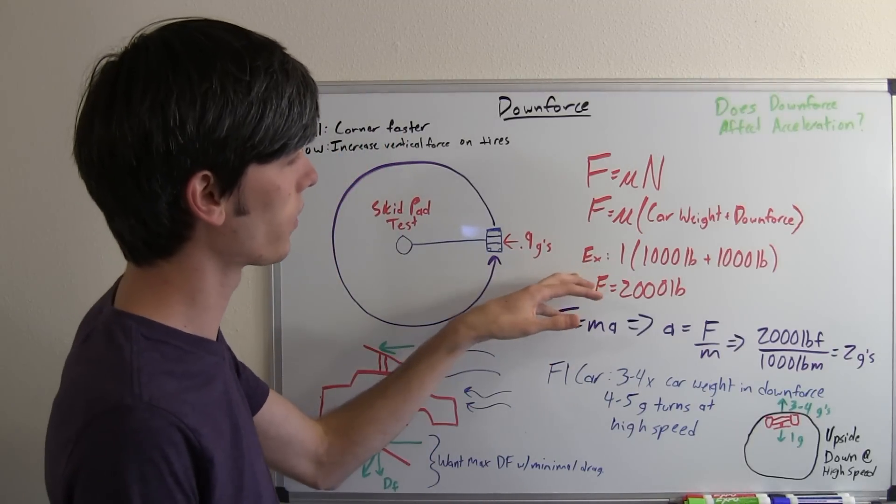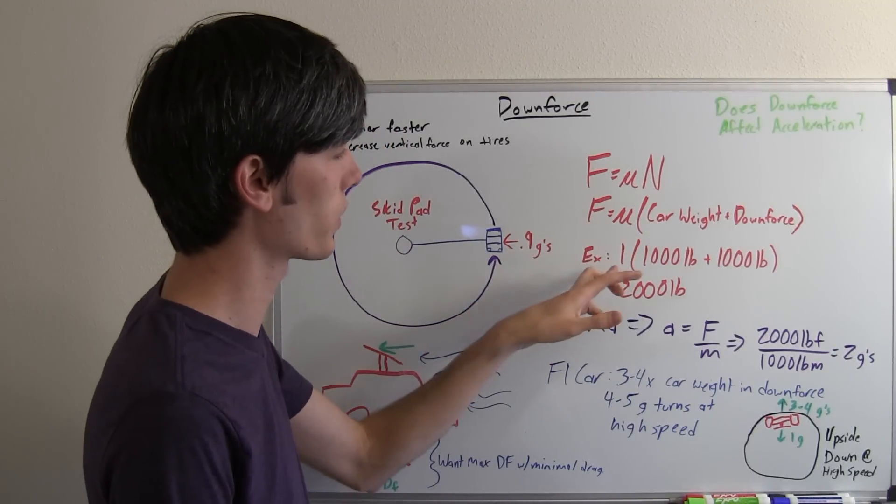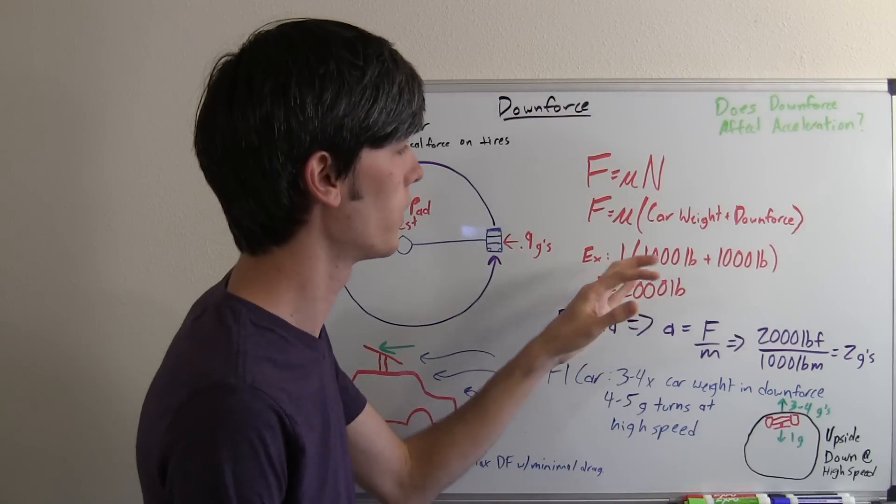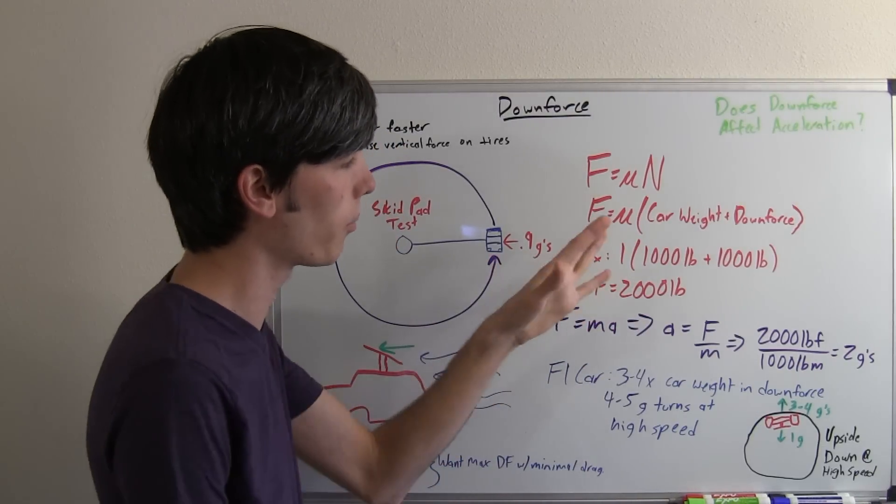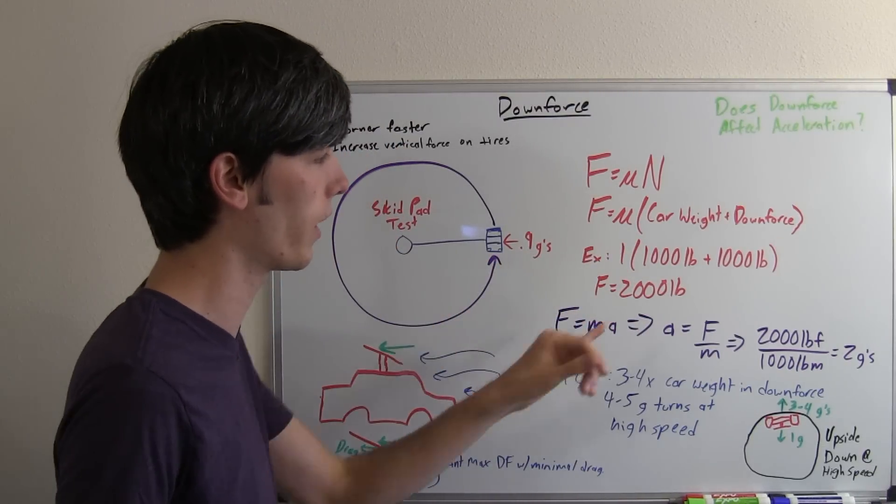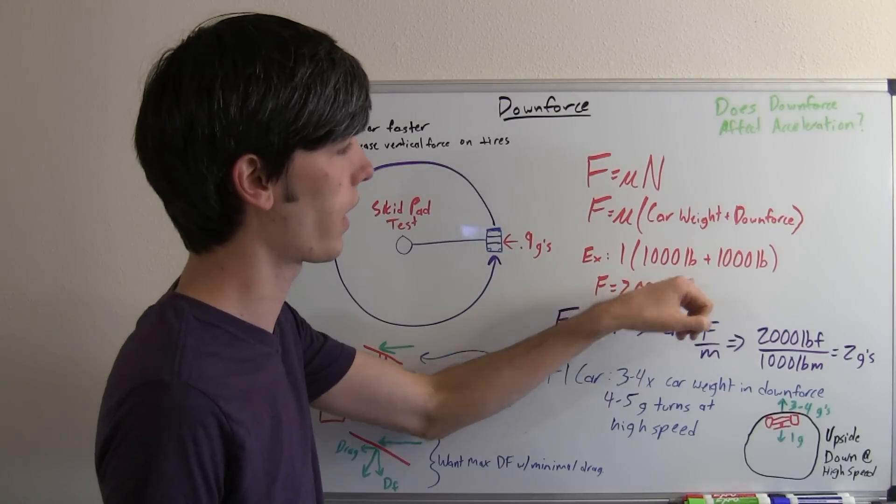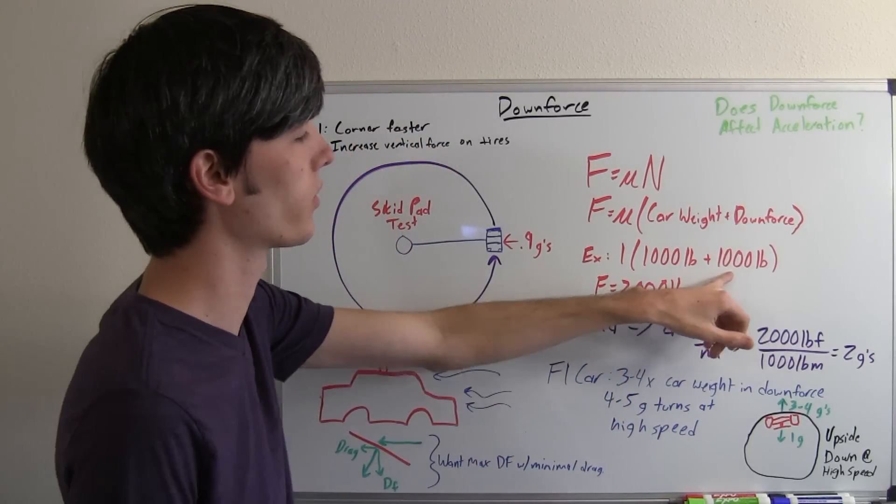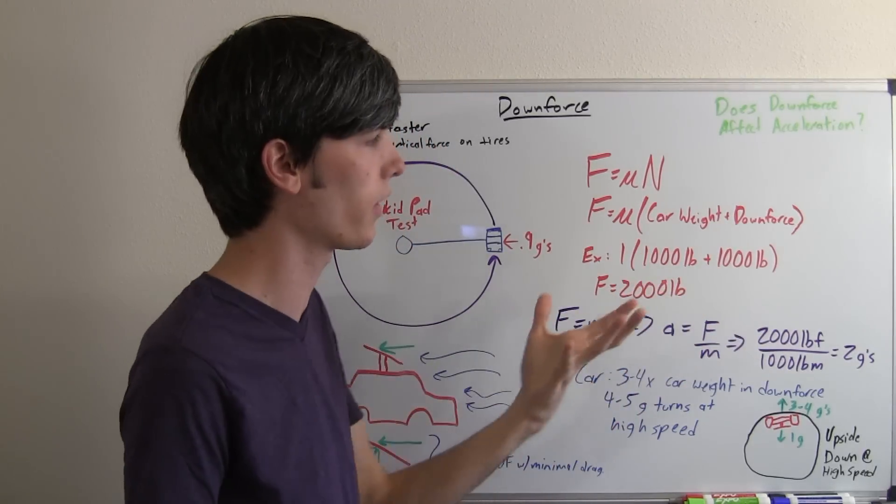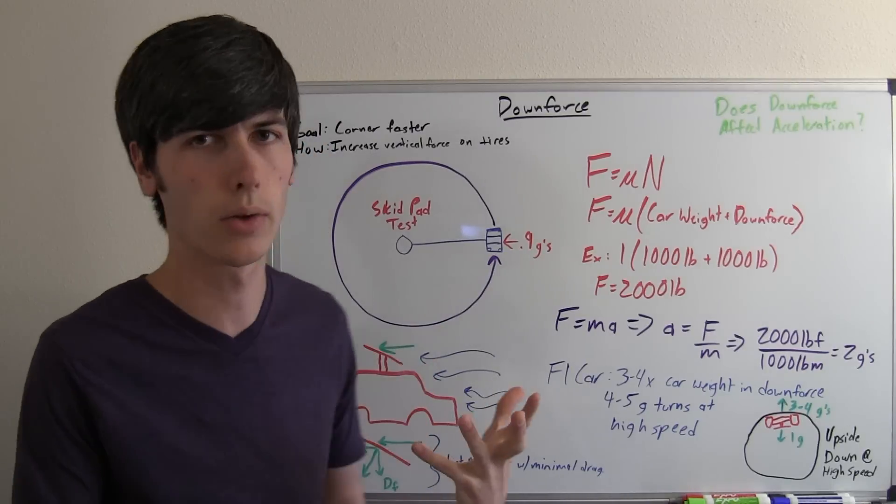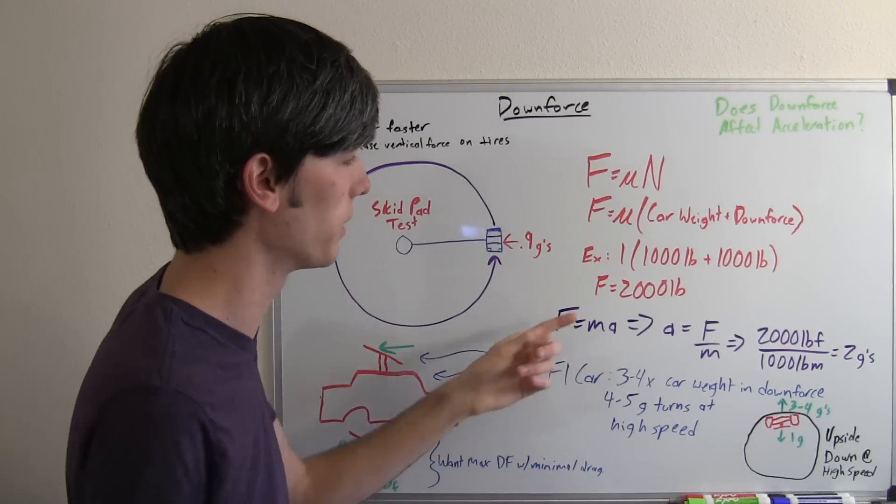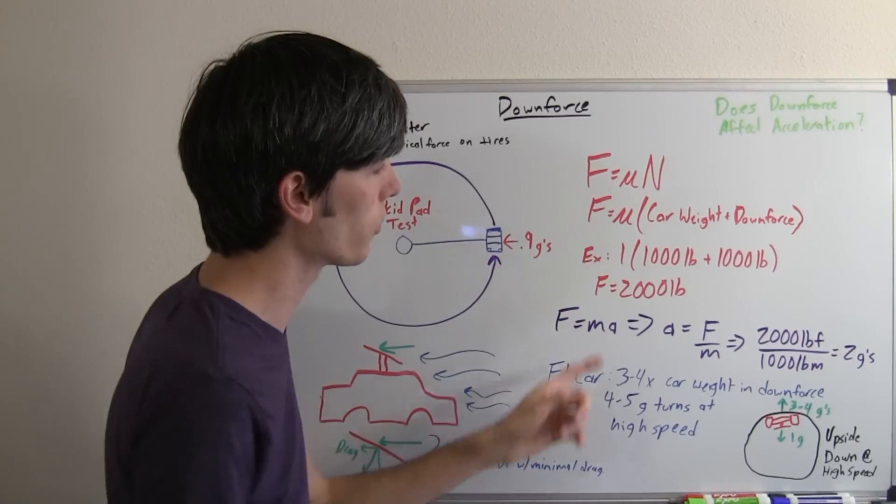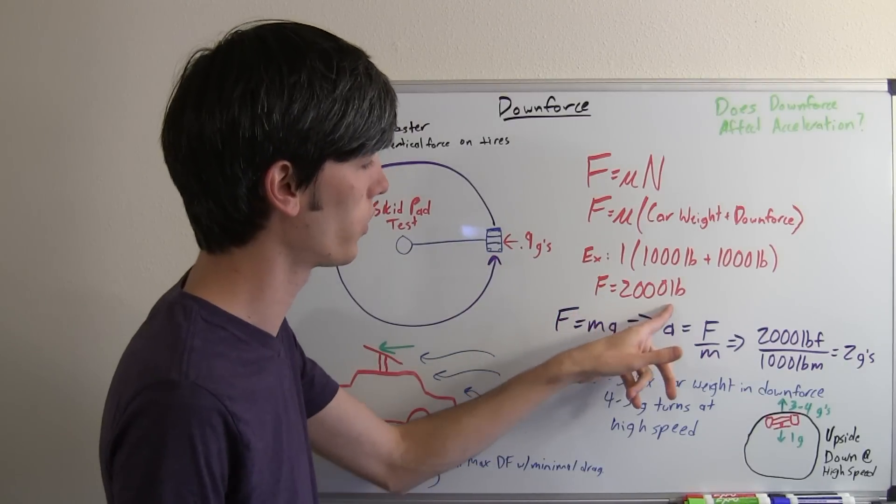Just taking an example, let's say we have a coefficient of friction of 1 - it's going to be typically anywhere from about 0.8 to 1 for modern tires. We're going to have a car that weighs 1,000 pounds and 1,000 pounds of downforce. Now 1,000 pounds of downforce means you're going to be at a pretty high speed, as downforce increases exponentially with speed. So the total frictional force that this car can withhold is 2,000 pounds.